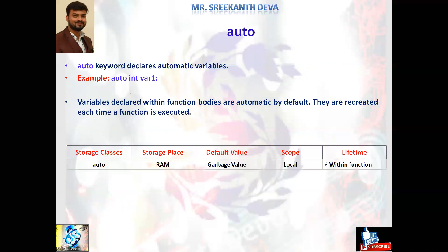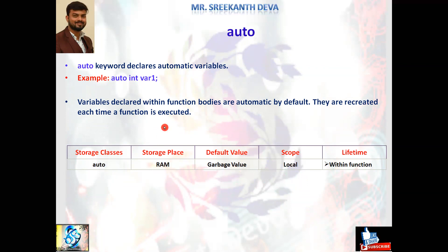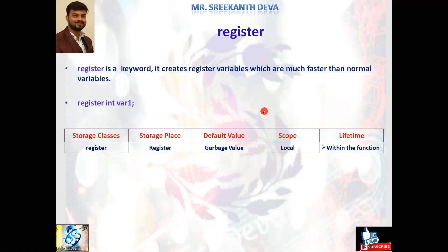auto is a keyword that declares automatic variables. For example, auto int var1. If you do not declare auto, by default any variable declared within a function becomes an automatic variable. Auto is a storage class stored in RAM. The default value is a garbage value. The scope is local to the particular block or function. Lifetime is within a function — once the cursor comes out of the function, the variable is not available.